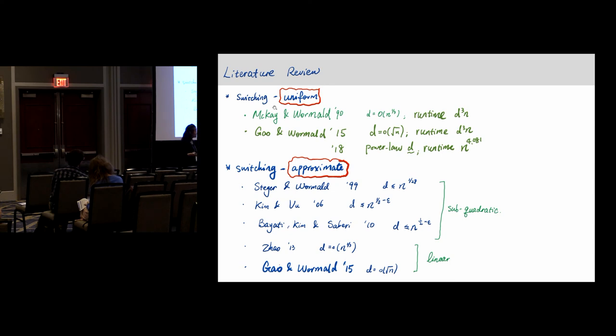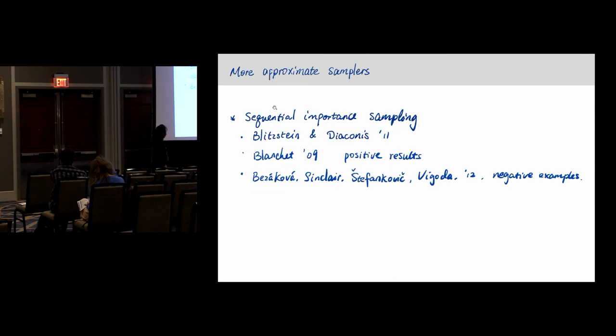The switching method typically works for degrees that are nice enough, like not too far from regular degree sequence. But we also make it work for heavily-tailed degree sequences such as power law degree sequences. That's a bit of literature review. Besides those two research lines, there are also other ways to generate random graphs with a given degree sequence. One is sequential importance sampling.